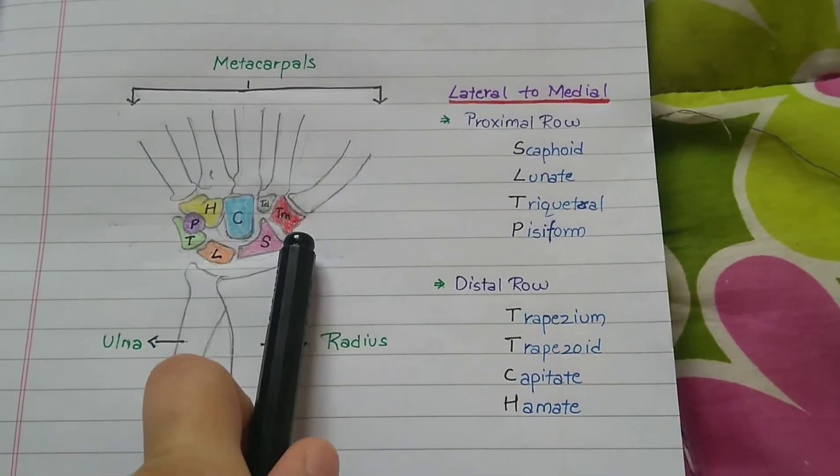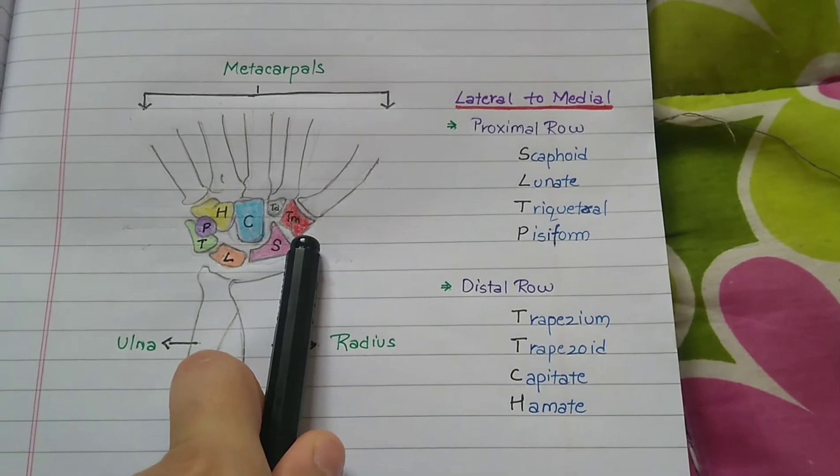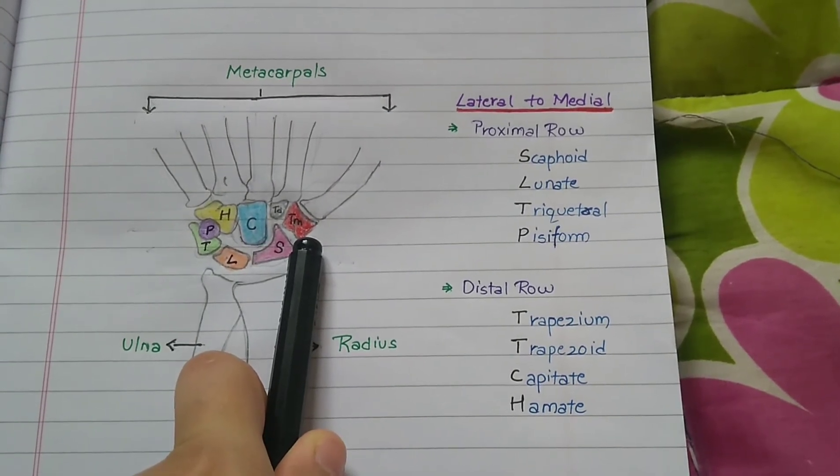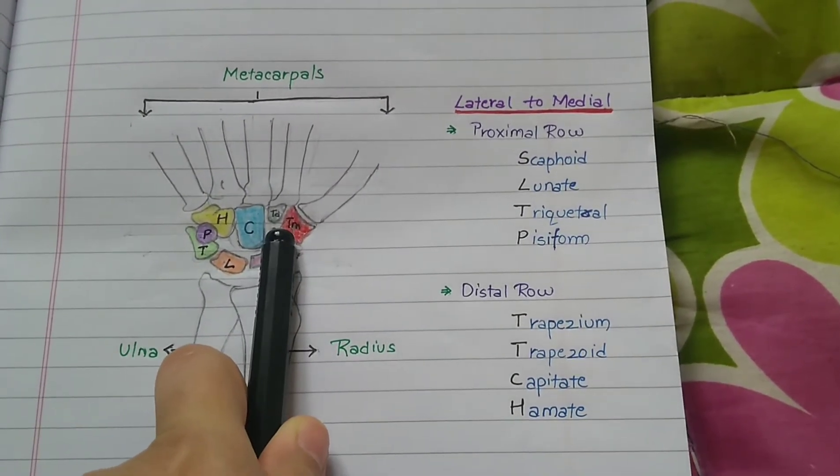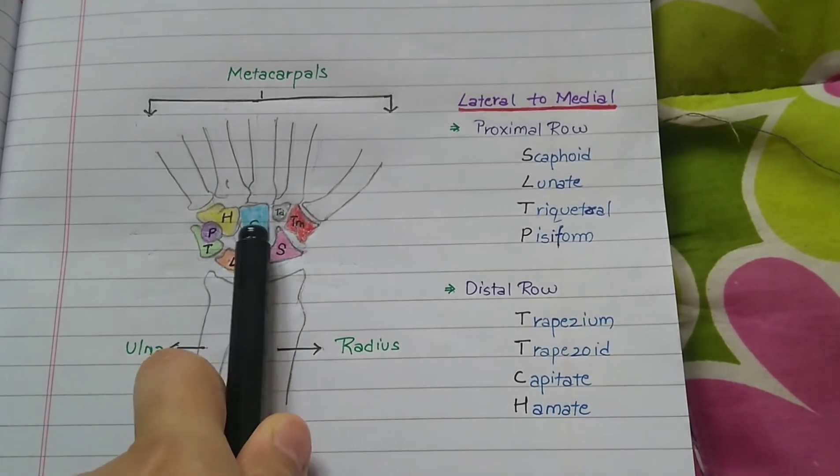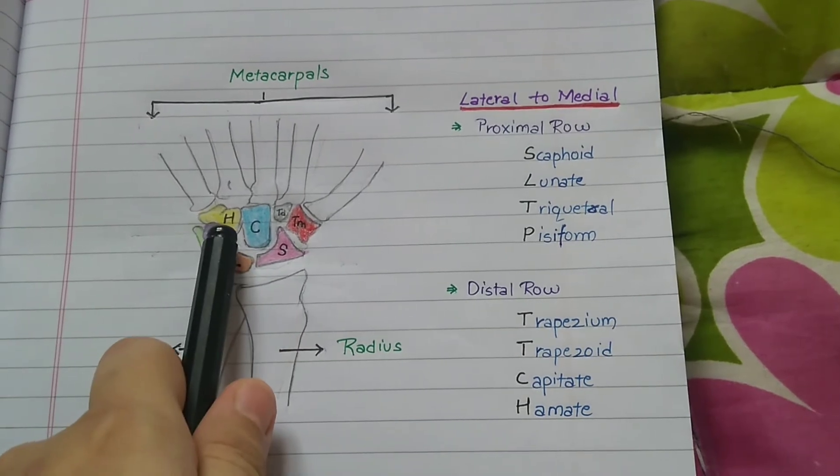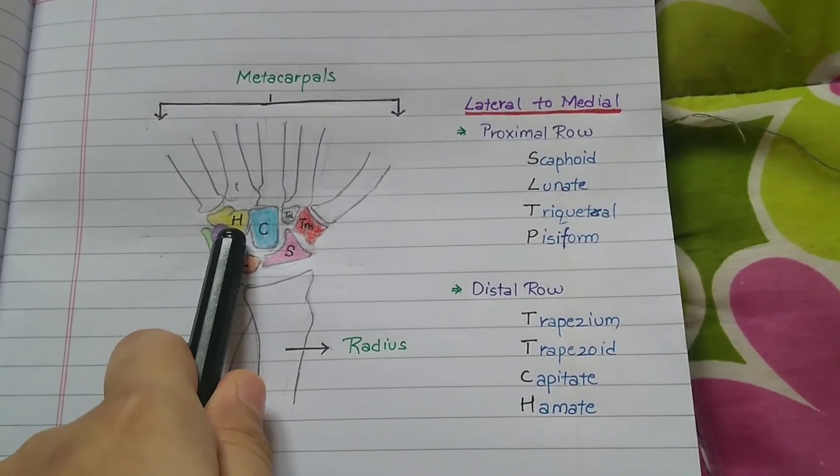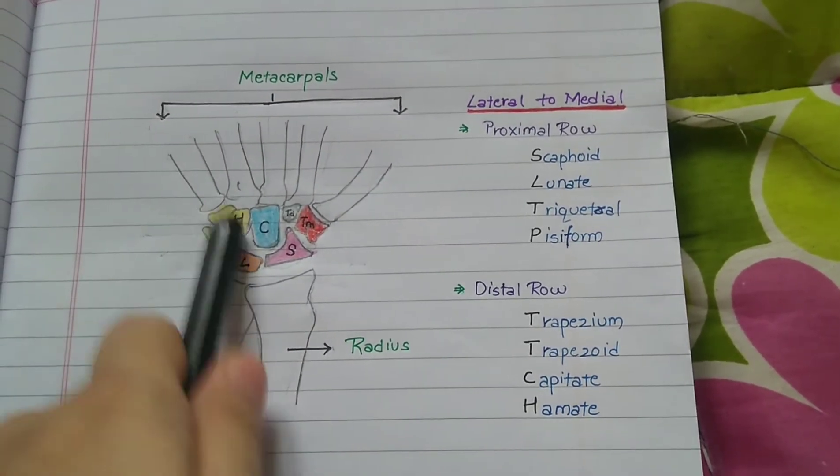In the distal row, the first bone is the trapezium which is a rounded square shaped bone. The next bone is a trapezoid which is shaped like a wedge. The larger bone in the middle of the wrist is the capitate. And the next bone is hamate which is the bone under the pinky finger.